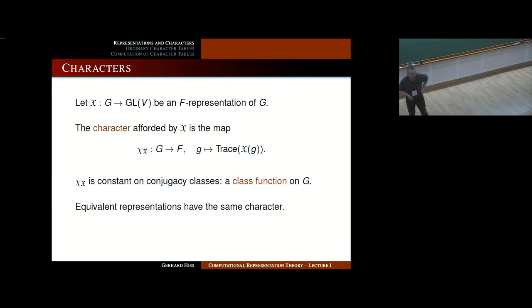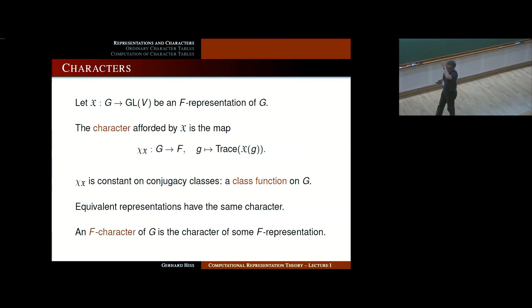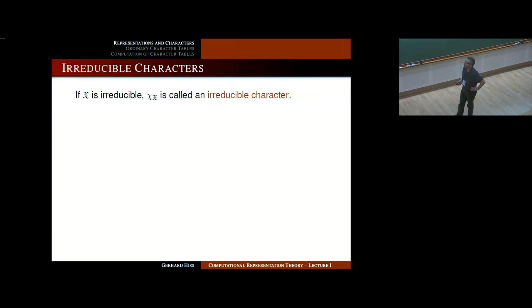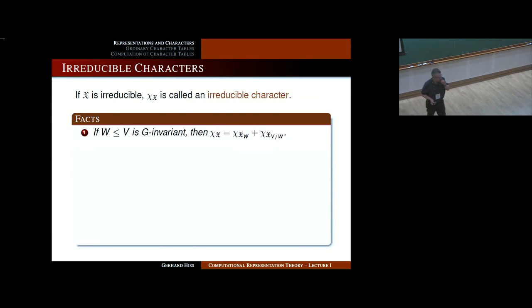Equivalent representations have the same character because traces of similar matrices are the same. An F character of G is a character of some F representation. If I say F character or character, I always mean the character of a representation, and I can specify the field F with it. If you have an irreducible representation, the corresponding character is called an irreducible character.